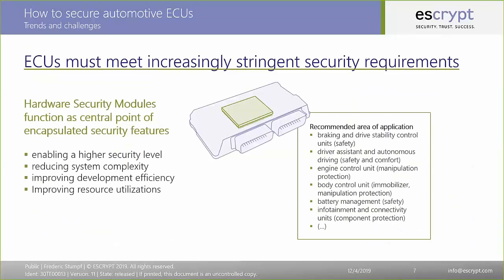There is a trend from Tier 1s and OEMs that ECUs must meet increasingly stringent security requirements. Hardware security modules are a very viable approach to realize this, because they enable a higher security level by encapsulating security features in a dedicated silicon — a dedicated execution engine inside a microcontroller. These approaches also reduce system complexity, because you have a dedicated security engine that can concentrate on its main task: doing security. You can also improve resource utilization by moving security features from the normal application core, allowing the application controller to concentrate on its main task. This improves development efficiency and resource utilization.